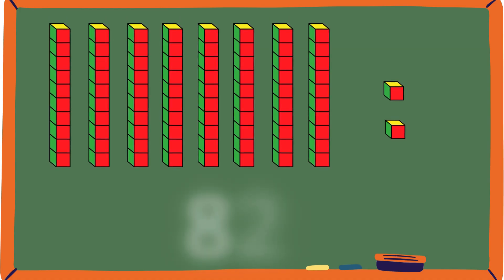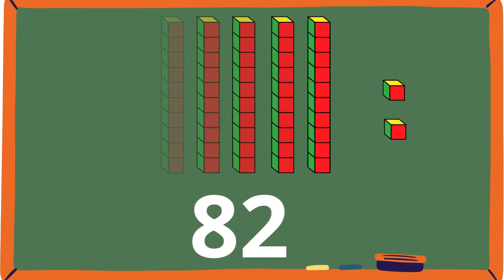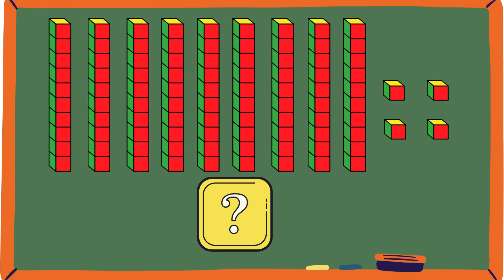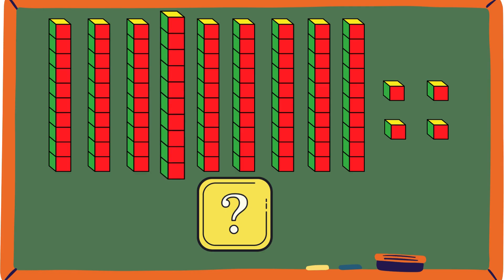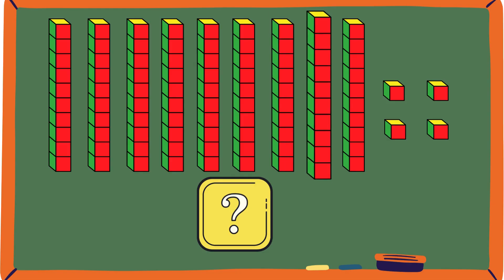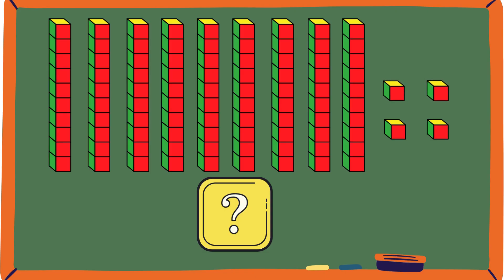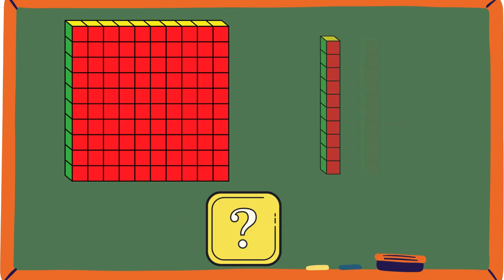These blocks are a clue — what number do they show? 10, 20, 30, 40, 50, 60, 70, 80, 90, 91, 92, 93, and 94. Woohoo, it's 94 — that's a really big number!